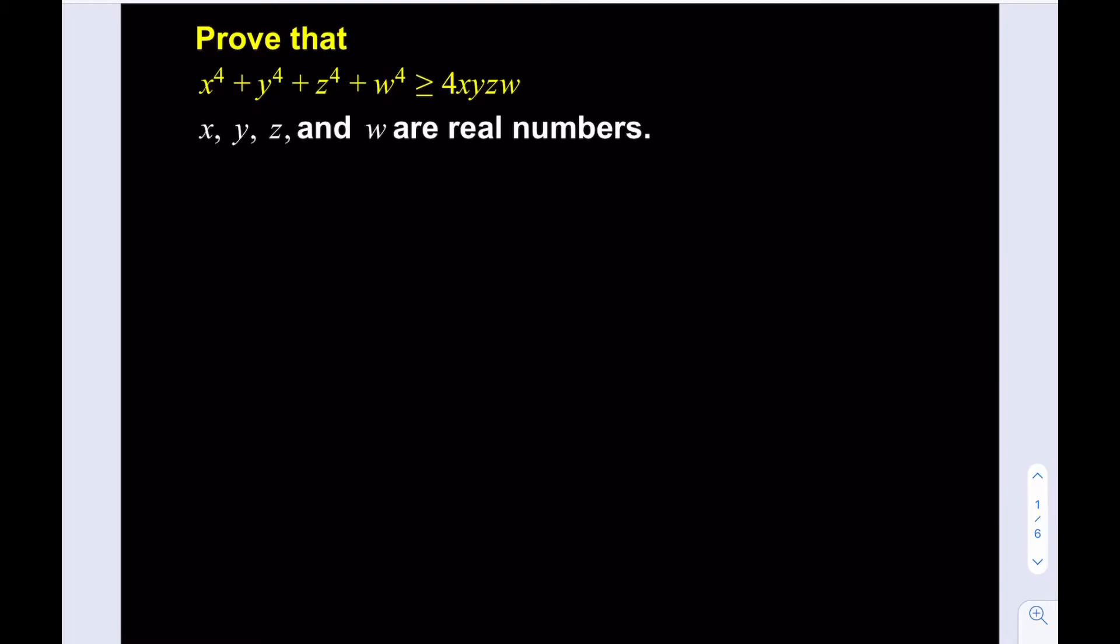So we're supposed to prove this inequality and we have fourth powers on the left hand side. x, y, z and w are real numbers and we're going to be using some formulas or algebraic identities to prove this. So let's go ahead and do this.